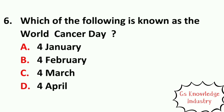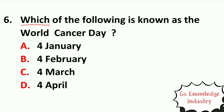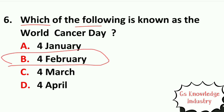Question six: which of the following dates is known as World Cancer Day? Option A, 4 January. Option B, 4 February. Option C, 4 March. Option D, 4 April. The right answer is Option B — 4 February is World Cancer Day.